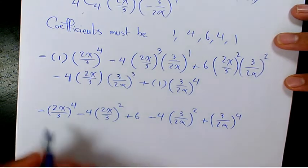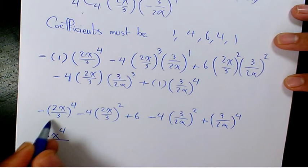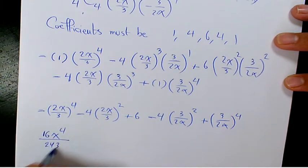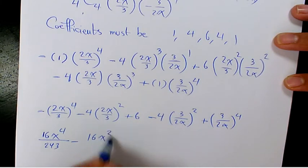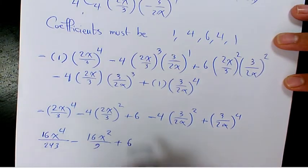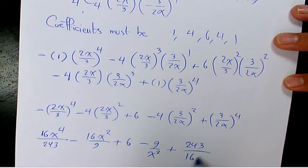You can leave it like that or you can expand it further, which is going to be 16x to the power of 4 divided by 243, minus 16x squared over 9, plus 6, minus 9 over x squared, plus 243 over 16x to the power of 4.